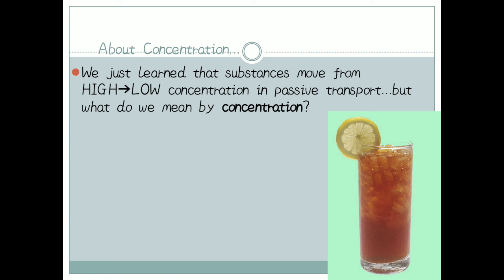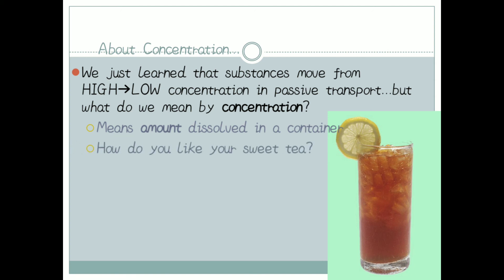Substances move from higher concentration to lower concentration in passive transport, with no need for energy. What do we mean by concentration? It refers to the amount of dissolved substances or solute in a container. For example, if you take two glasses of water — in the first glass you add one tablespoon of salt and in the second glass you add a bowl of salt — the second glass is more concentrated. That is the concept of concentration.